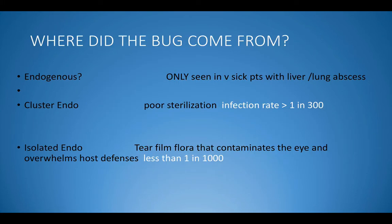Endogenous infections are seen in very sick patients, not in the first weeks or months after cataract surgery. Endogenous endophthalmitis usually starts as an abscess forming in the choroid, breaking through the retina to cause a vitreous abscess. Cluster endophthalmitis comes due to break in sterilization — if one load of instruments is not sterilized properly, every patient on whom that load is used will get infection. Isolated endophthalmitis comes from contamination from the tear film flora, with the accepted rate of 1 in 1000 to 1 in 2000 cataract surgeries.